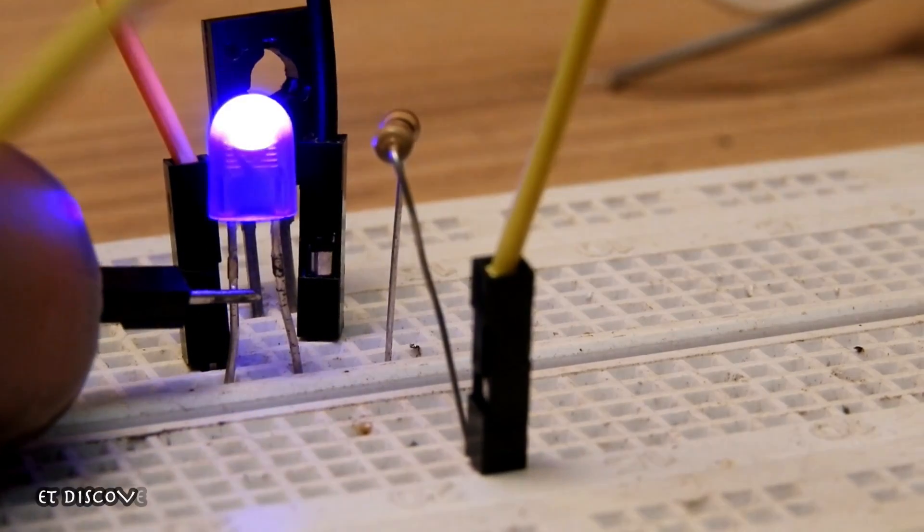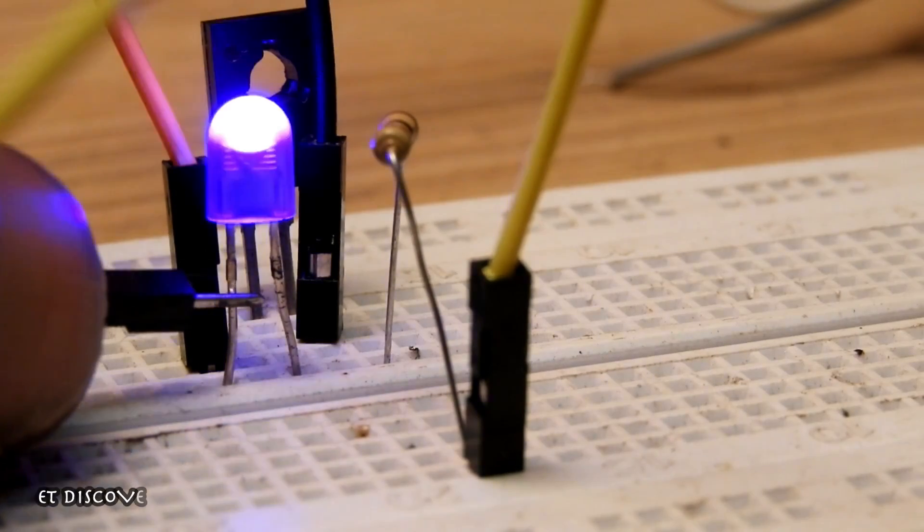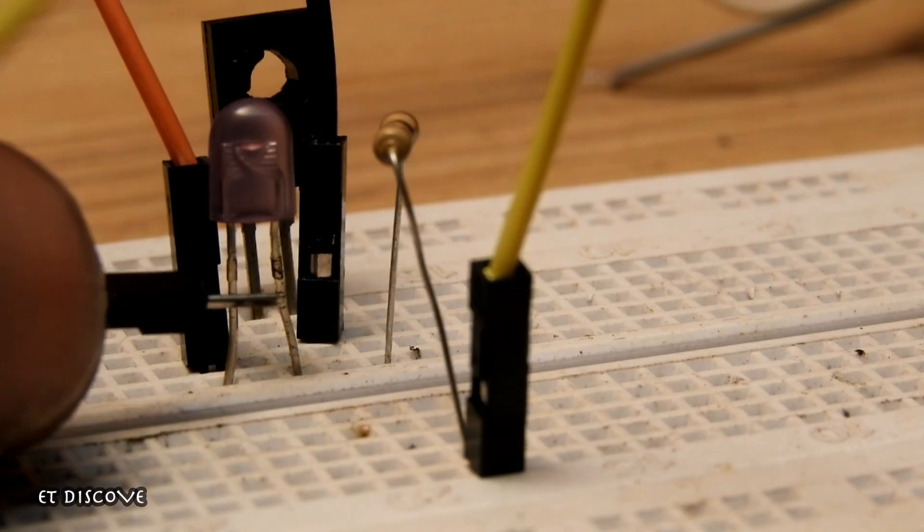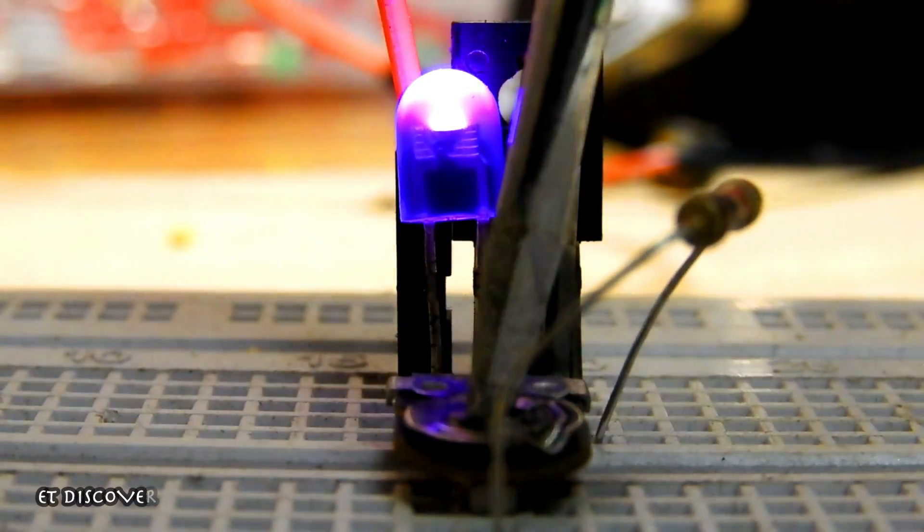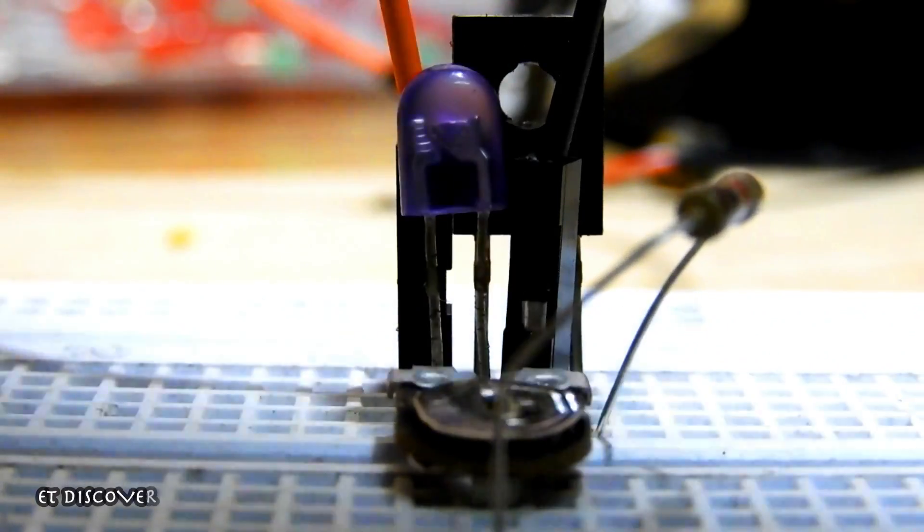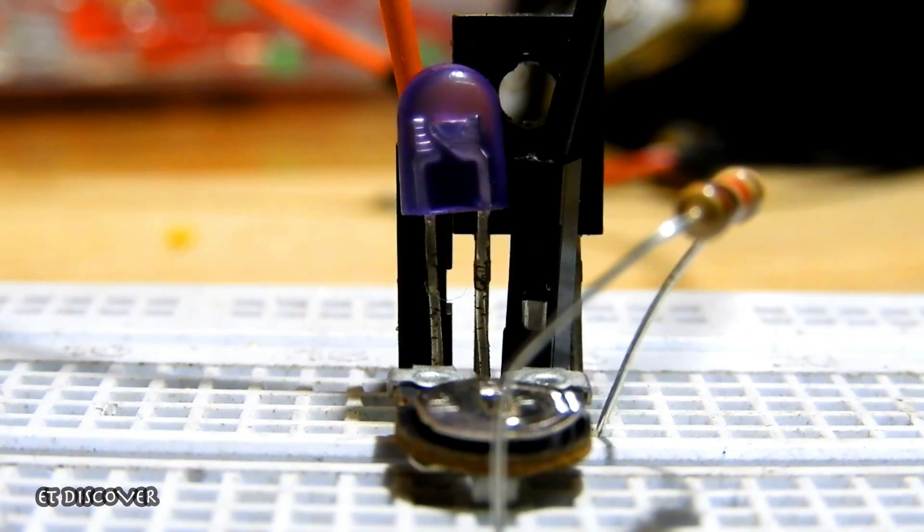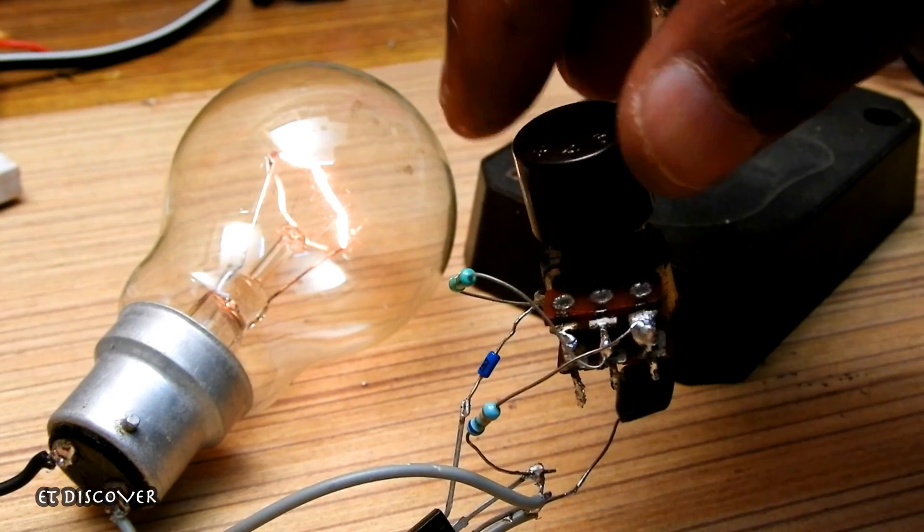You see, when I am adding positive to the transistor base pin, then the LED light is glowing. The connection between base and positive will decrease when the brightness of LED light will decrease as well. I have used this technology here.